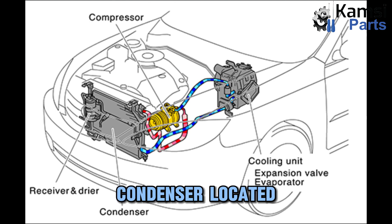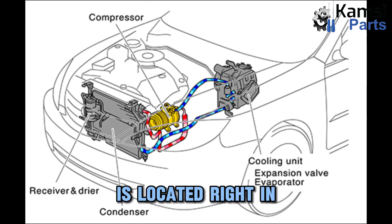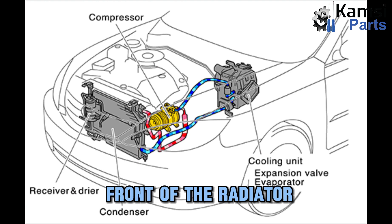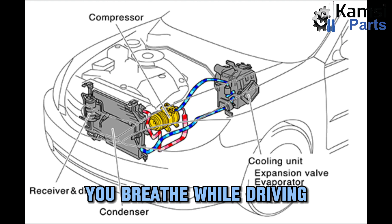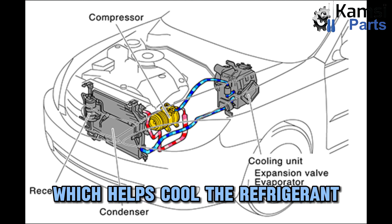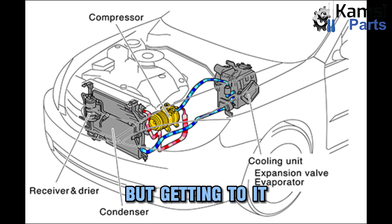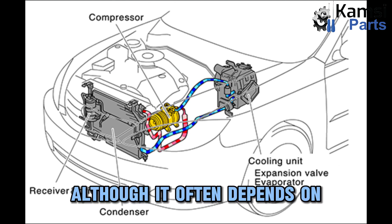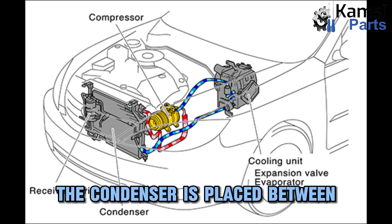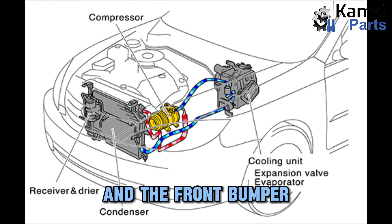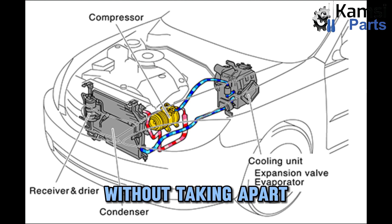Where is the AC condenser located? The AC condenser of your car is located right in front of the radiator. Due to its location, it has easy access to the air you breathe while driving, which helps cool the refrigerant. The condenser is visible in front of the radiator, but getting to it can be challenging, although it often depends on how your car is set up. The condenser is placed between the radiator and the front bumper, making access to it nearly impossible without taking apart other components.